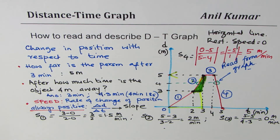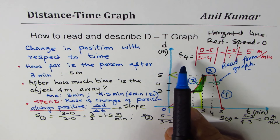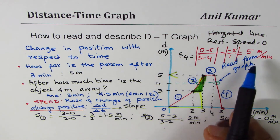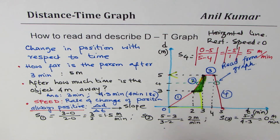The change in distance is negative on the return leg, but speed is always positive. If the question asked for velocity instead of speed, then we would write it as negative. For speed, always use the absolute value — always positive.